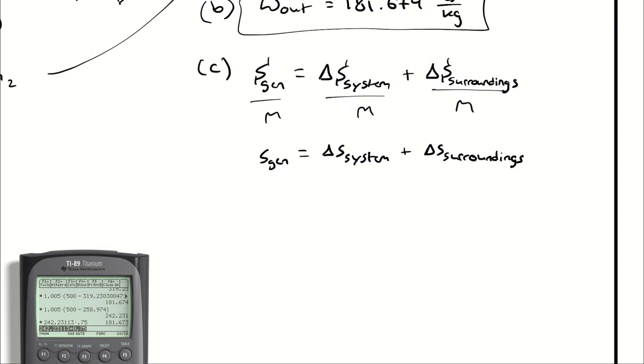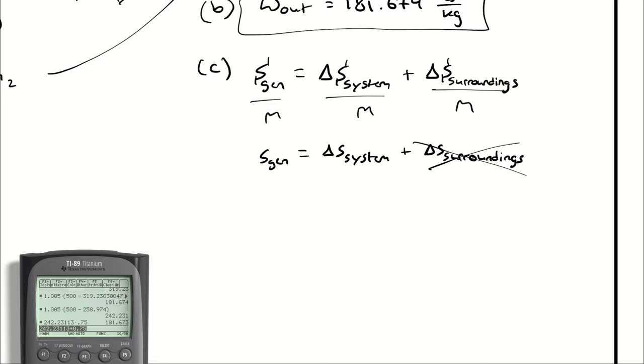I have an adiabatic turbine, which means that no heat is exchanged with the surroundings, which means that I have no entropy effect on the surroundings. So S-Gen is just delta S of the system.